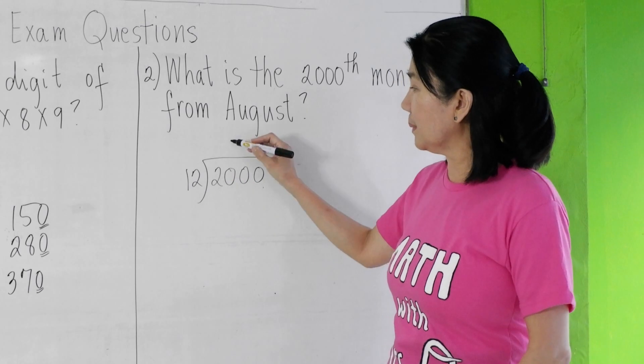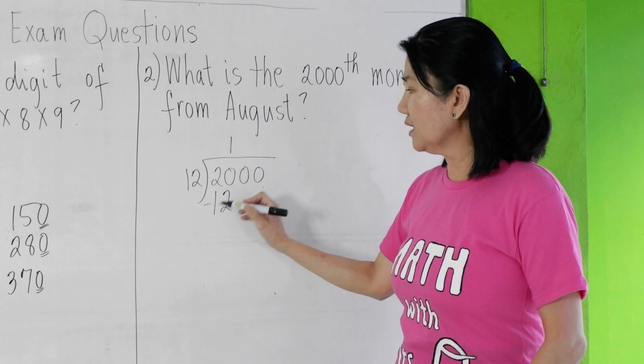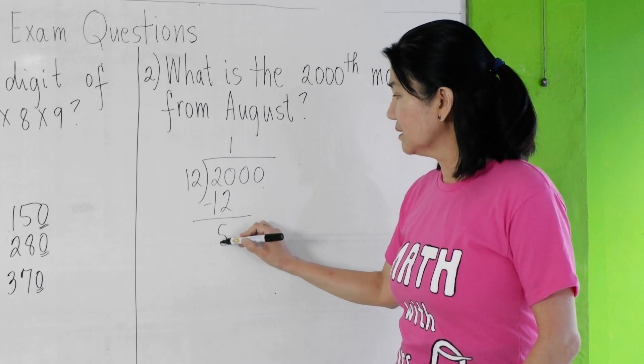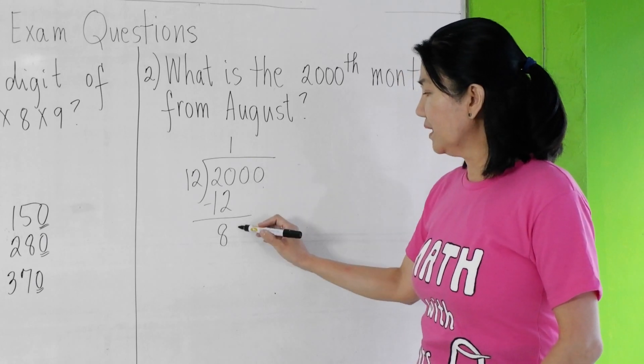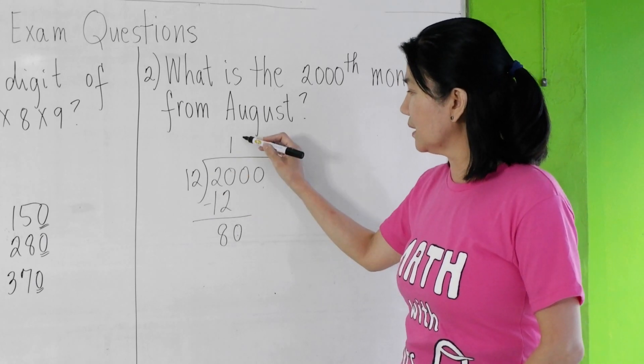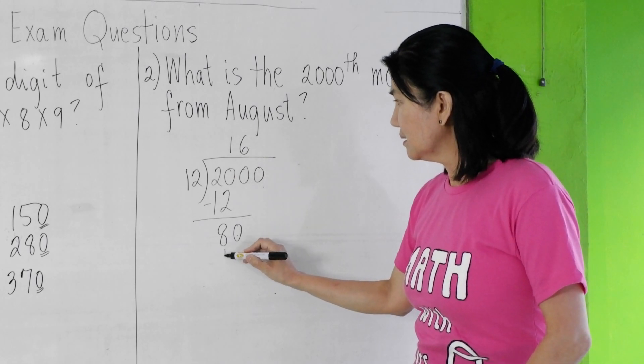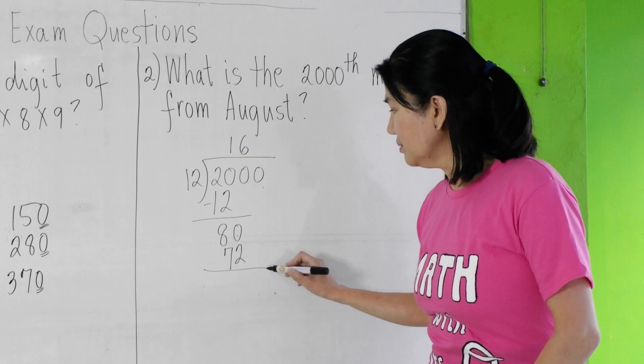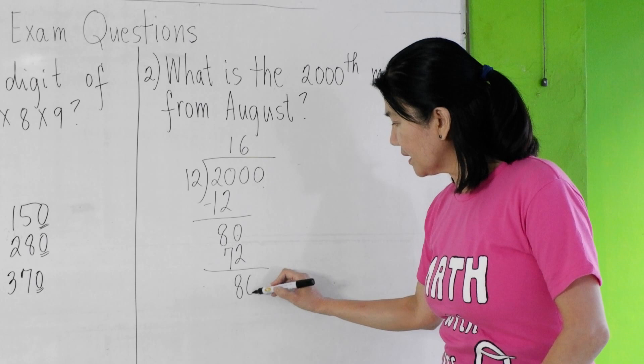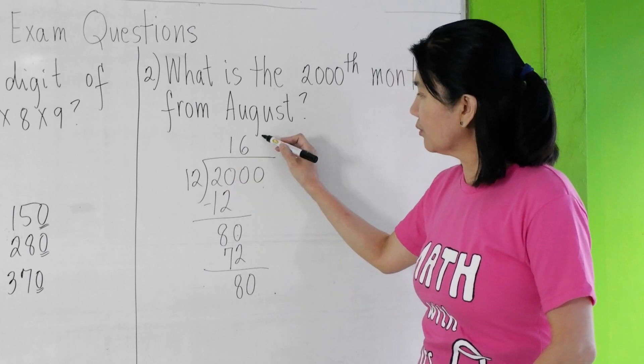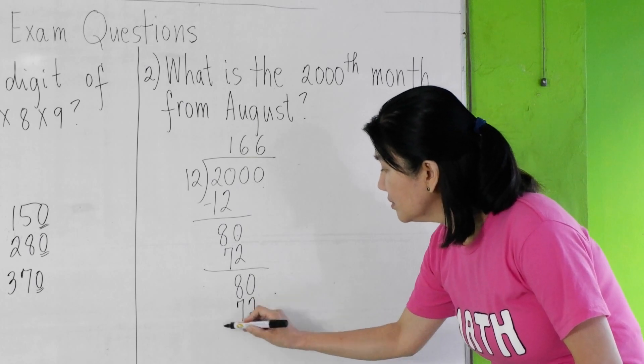So 20 divided by 12 is 1. 1 times 12 is 12. 20 minus 12 is 8. Bring down 0. 80 divided by 12 is 6. 6 times 12 is 72.